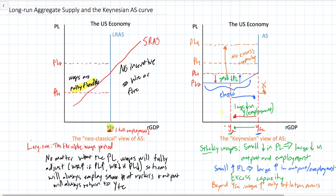The alternative to the neoclassical view is the Keynesian view, which says that if there is deflation, firms will have to lay workers off because wages are sticky. Therefore, there will be a relatively large decrease in output as a result of a relatively small decrease in the price level. But because of the existence of excess capacity, when an economy starts to recover from a recession, it can enjoy large increases in employment and output with relatively small levels of inflation.